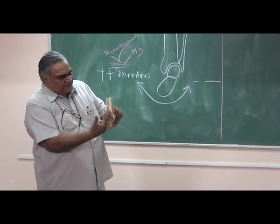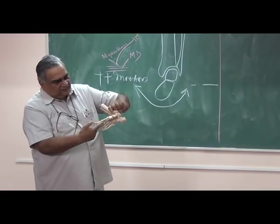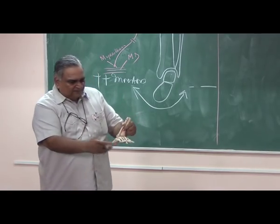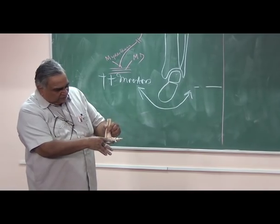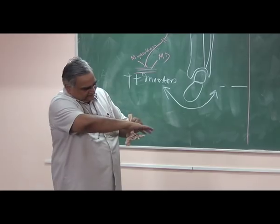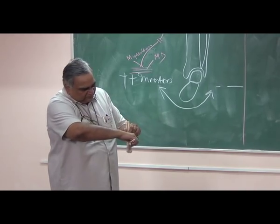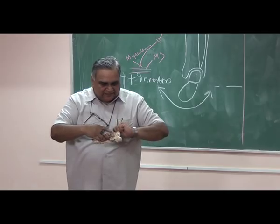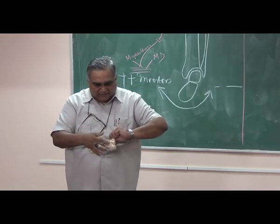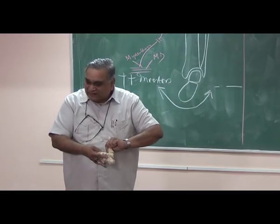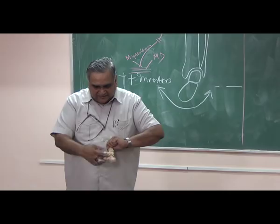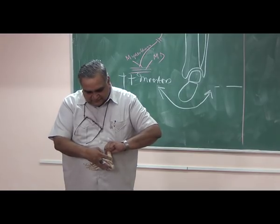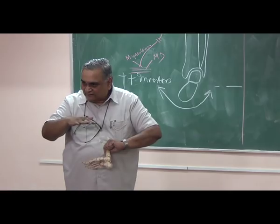Then you place your thumb not on the cuboid but on the head of the talus. Hold it, and correcting on the head of the talus, you correct adduction and eversion, so that the spring ligament comes under the head of the talus. Otherwise, if you dorsiflex too early, the head of the talus will herniate between the sustentaculum tali and navicular and there will be rocker bottom. Or if you apply too much pressure, the round talus will become a flat table-top because it is soft.